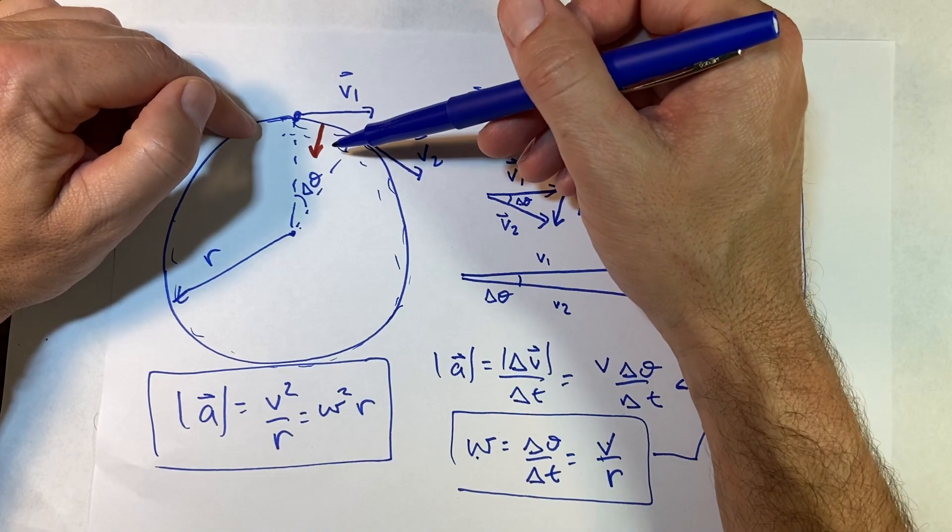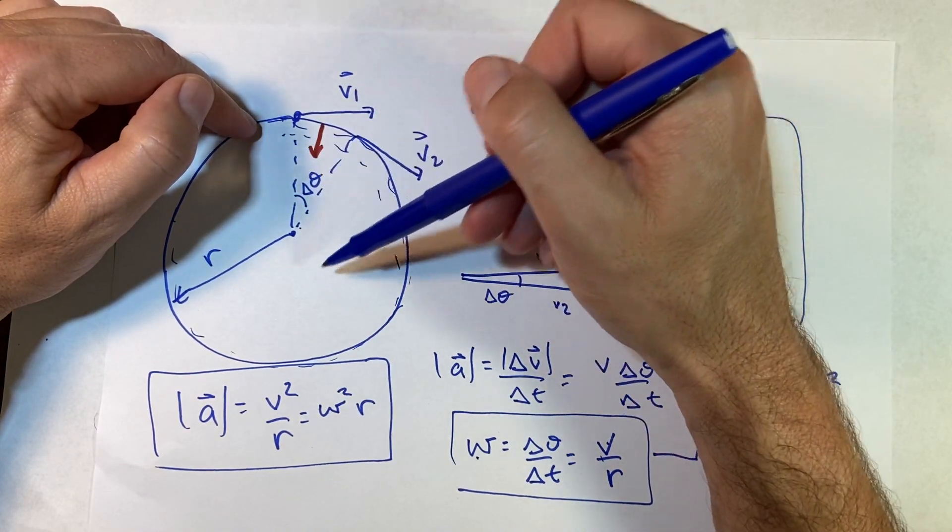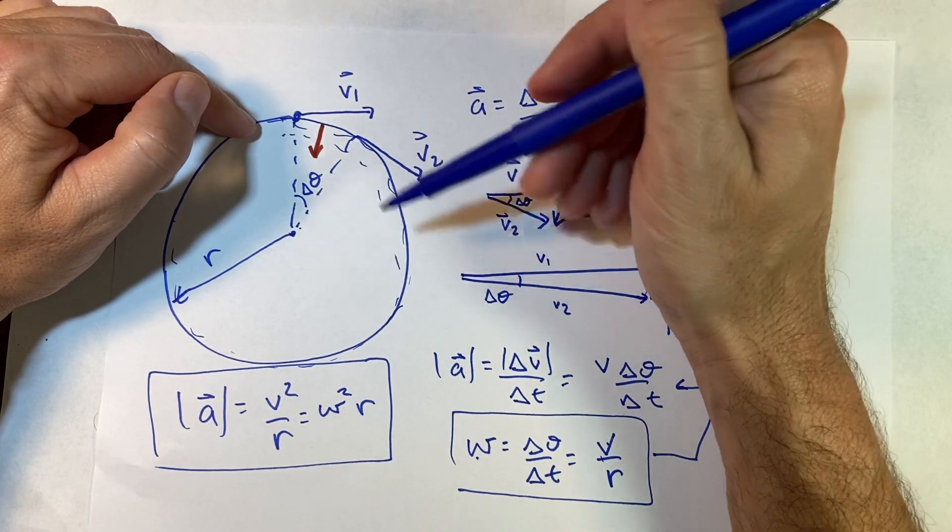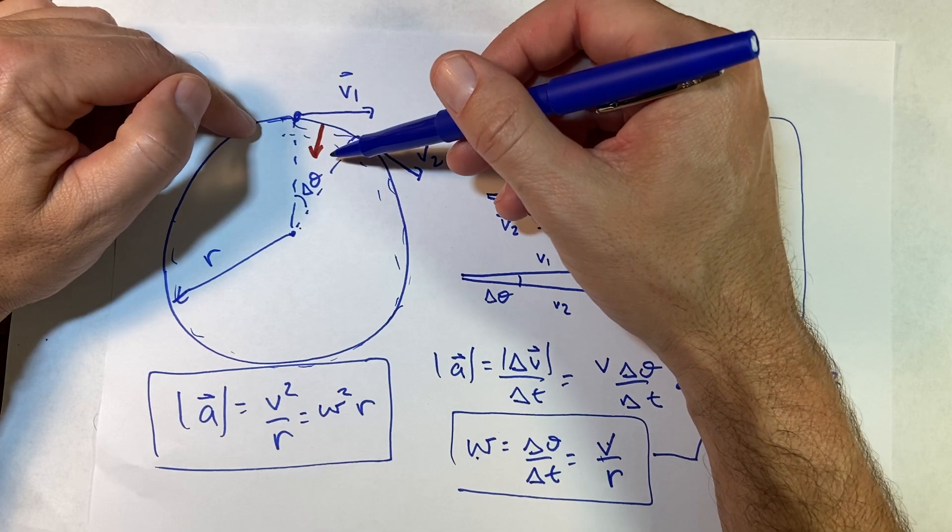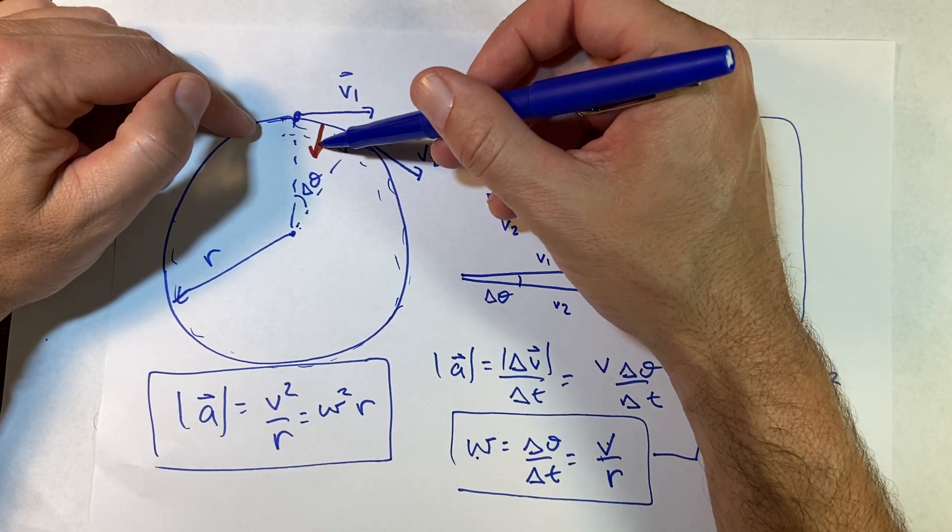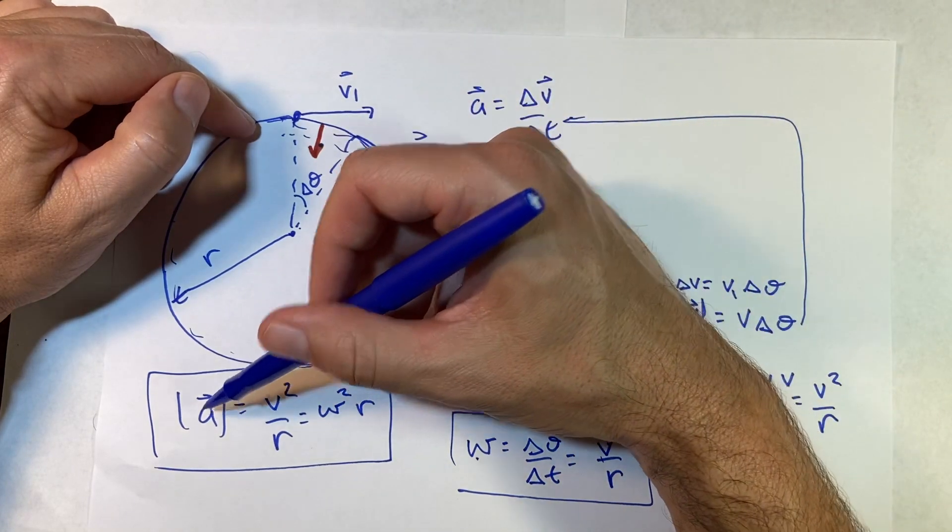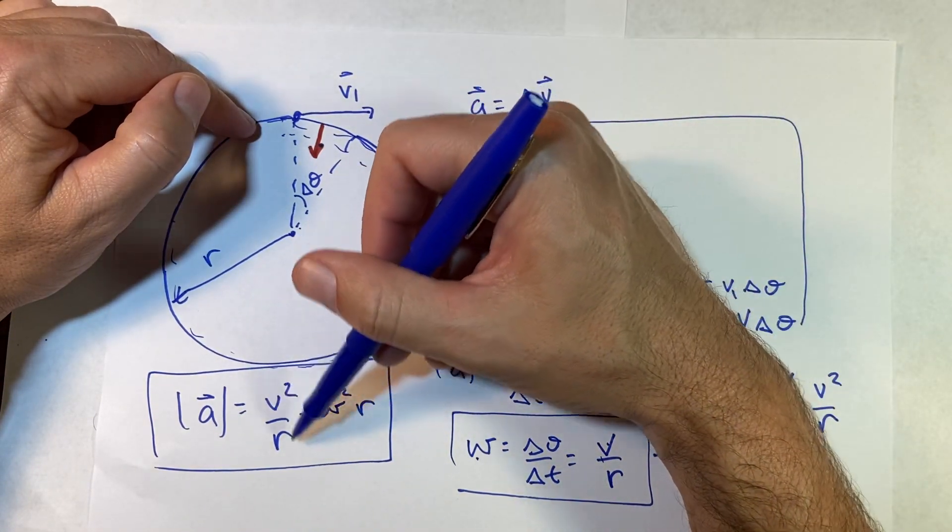Now if you go faster around that roundabout, if you increase the velocity, your acceleration increases. You can feel that. If you go in a smaller circle, as you decrease r, you also increase acceleration. So these are the two important points about the centripetal acceleration: the direction is towards the center—get that from the name centripetal acceleration—and the magnitude is v squared over r.